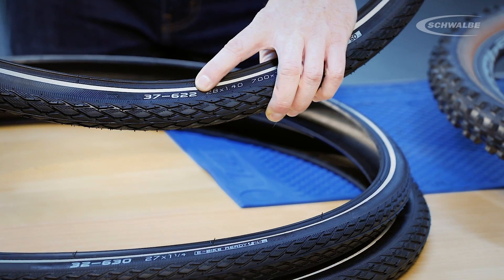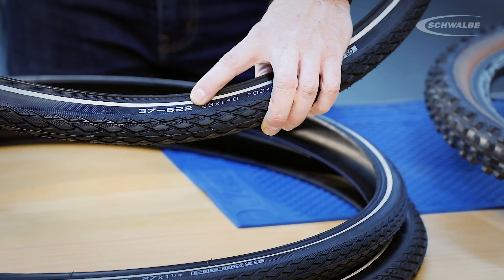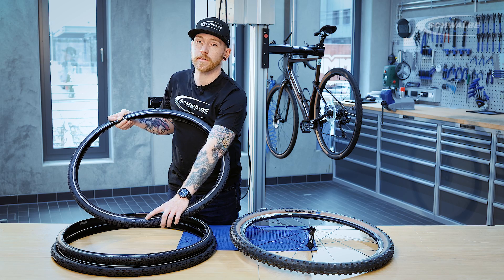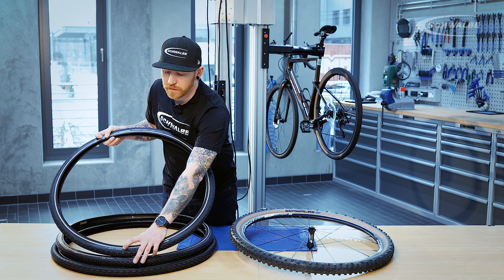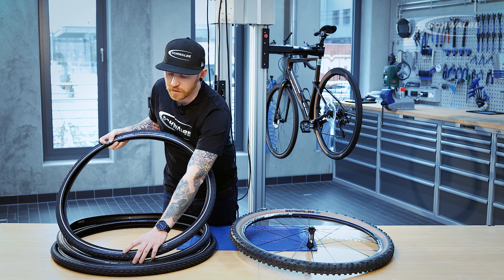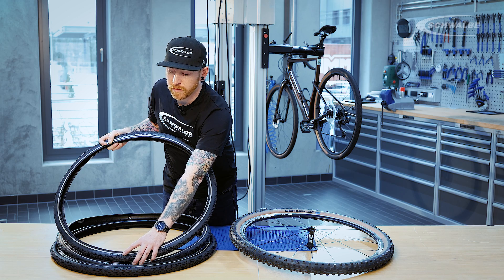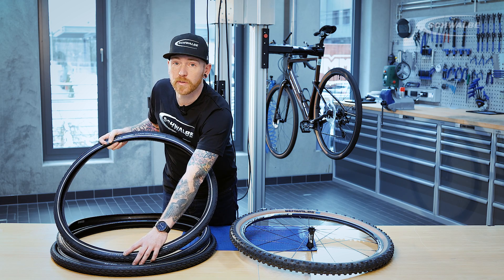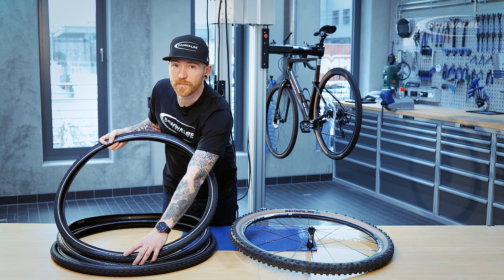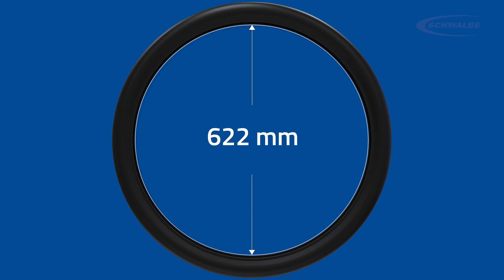The last three digits refer to the internal diameter of the rim, and as you can see here as the sizing goes, the ETRTO sizing goes up. With the 37-622 tyre, the 37 refers to the width of the tyre and the 622 is the internal diameter of the tyre.